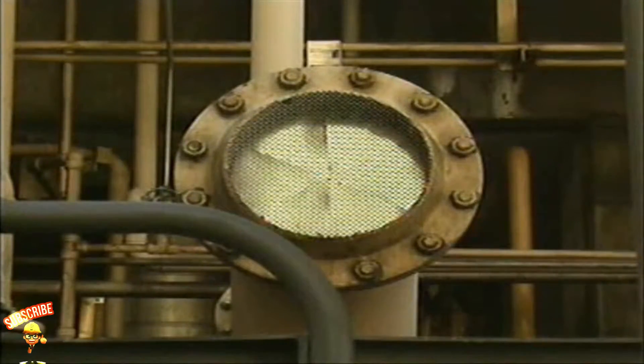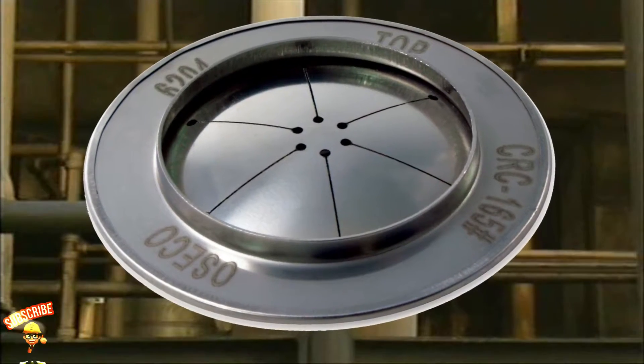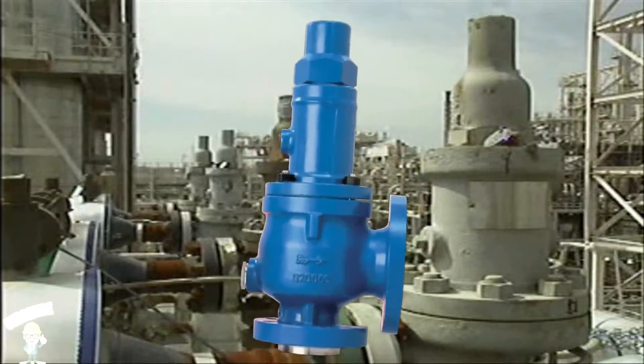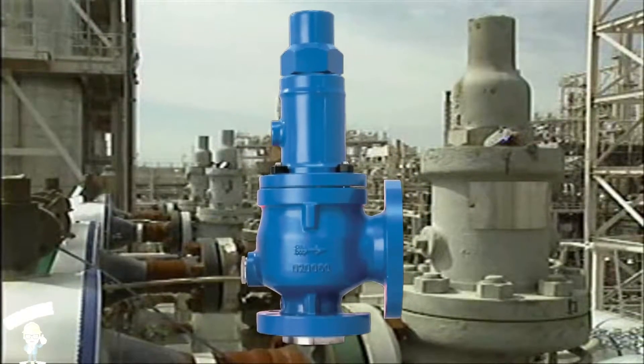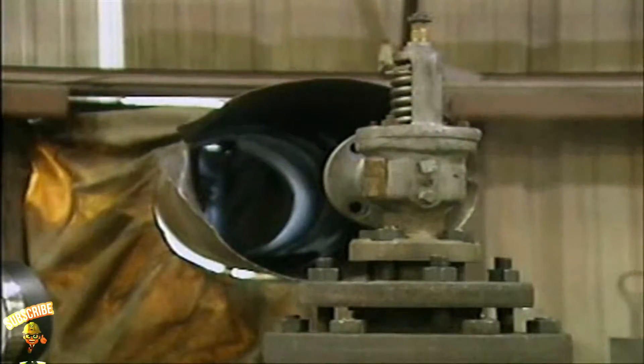Rupture discs are often used in systems where problems with excess pressure are relatively unlikely. Relief valves, which open gradually, are primarily used in systems that handle pressurized liquids. In gas or steam systems, however, safety valves are used.